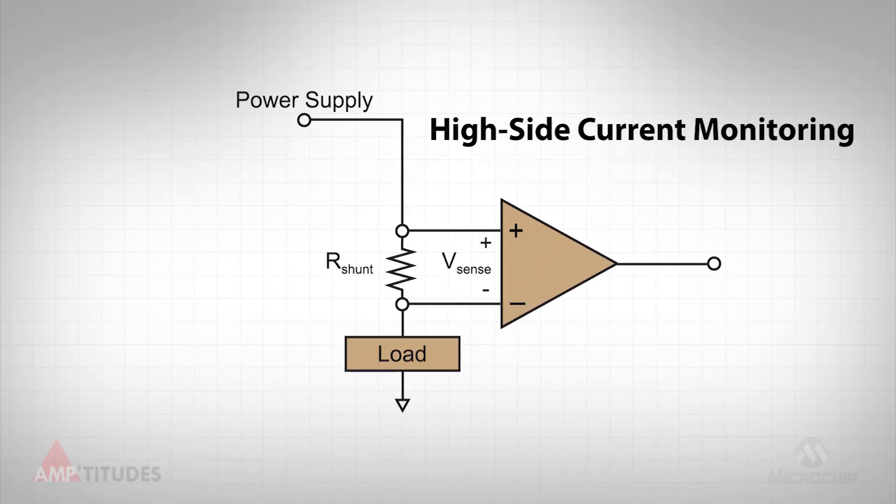For high-side current monitoring, the shunt resistor is placed between the power supply and the load, as shown here.